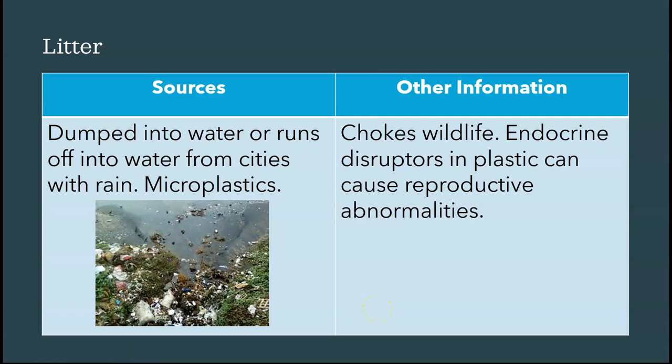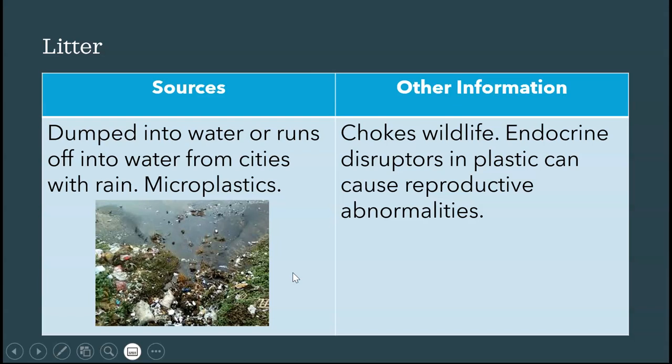The last pollutant type is litter and trash. Some parts of the world dump waste directly into the ocean, and in the United States, rain washes trash from streets into storm drains, which lead to rivers and oceans. The most dangerous time to swim in the ocean is actually after a rain, because rainwater washes fertilizers, dog waste, trash, and other contaminants into the water system.